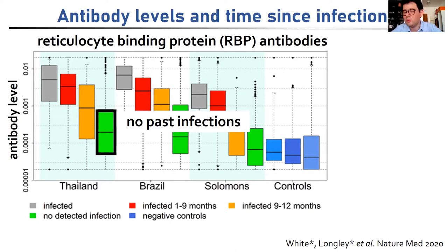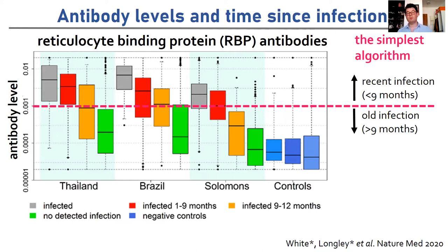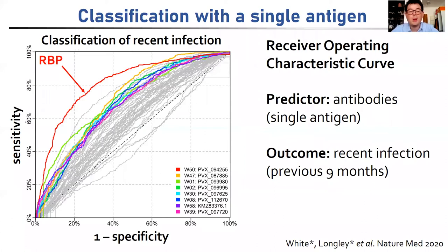We want to use this measurement of antibody response to identify individuals with recent infection, where recent is defined as the last nine months. The simplest approach is to draw a single cutoff: above it, you're classified as recently infected; below it, as having an old infection. We can assess the performance of this using a receiver operating characteristic curve, which looks at the trade-off between sensitivity and specificity. Here is the performance of the 60 antigens we tested, and our top hit, the reticulocyte binding protein, stands out as the best antigen.